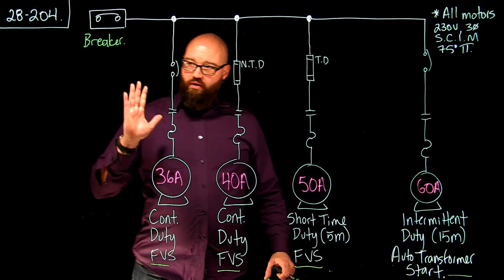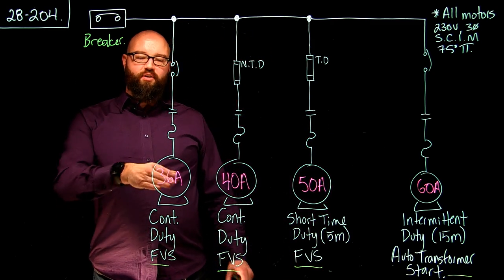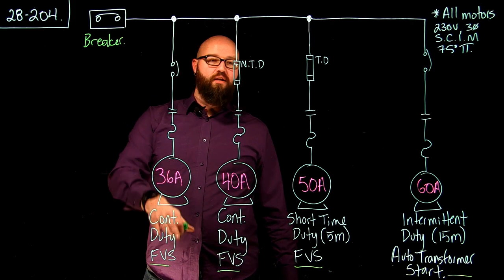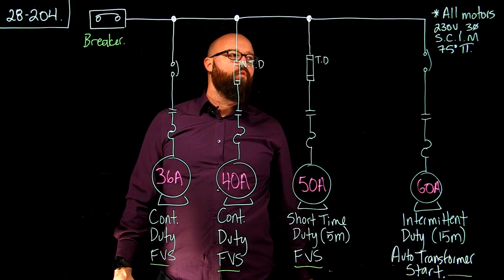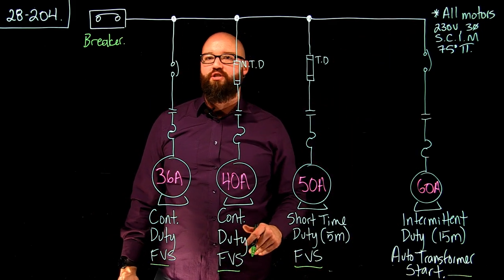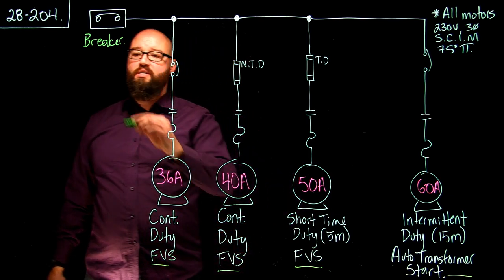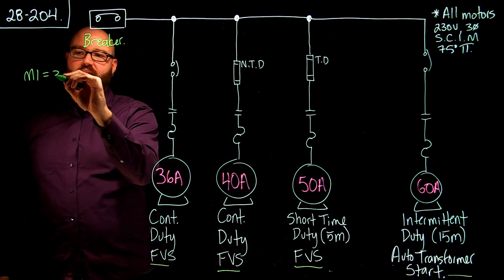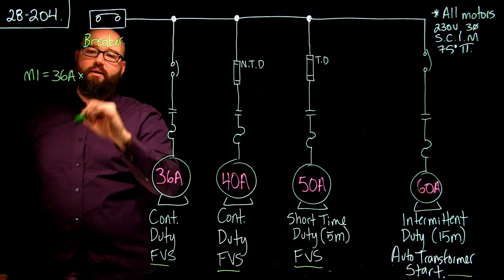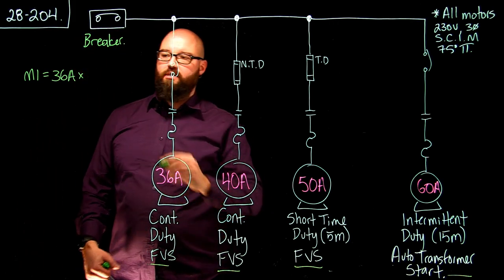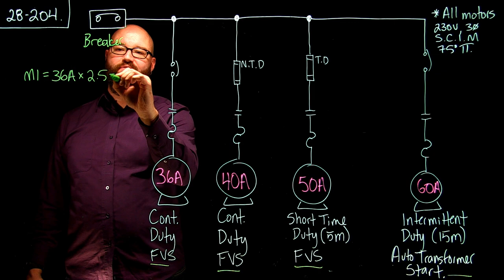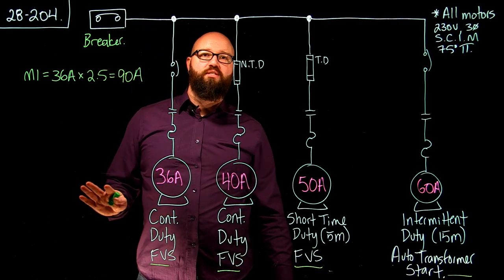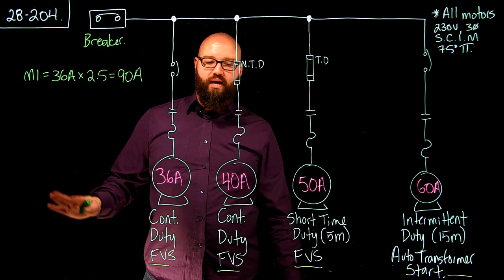Let's start with our 36-amp motor. I'm going to go to Table 29 and find, for a full voltage start, 230-volt, three-phase squirrel cage induction motor. Motor 1 would be 36 amps times 250% — that's 2.5 — giving me 90 amps. I'm not going to do anything with this number just yet.